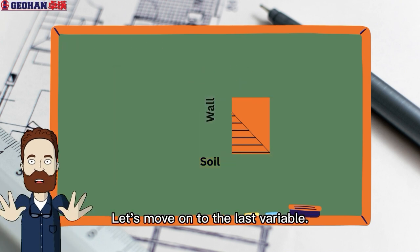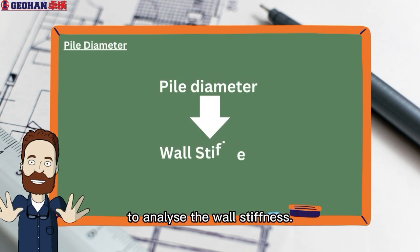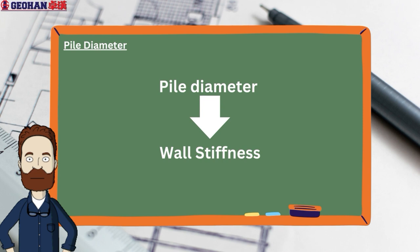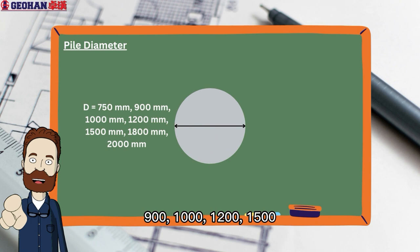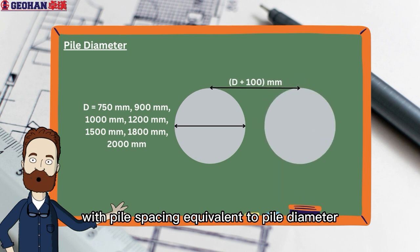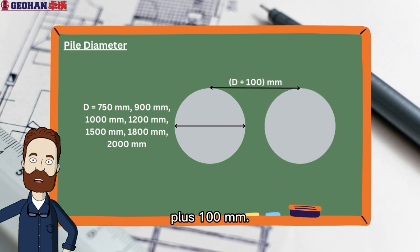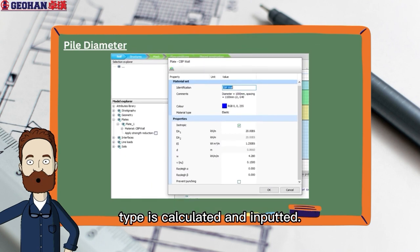Let's move on to the last variable. The pile diameter is manipulated to analyze the wall stiffness. The pile type implemented in this analysis are 750, 900, 1000, 1200, 1500, 1800, and 2000 millimeters, with pile spacing equivalent to pile diameter plus 100 millimeters. The material data of the respective pile type is calculated and inputted.